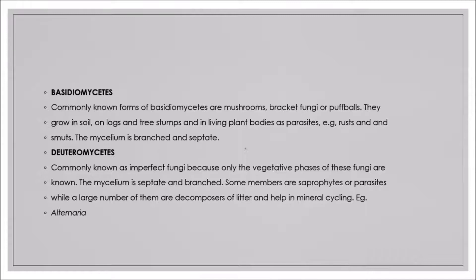Basidiomycetes include mushrooms, bracket fungi, and puff balls. They grow in soil, on tree logs, and tree stumps, and sometimes live as parasites in living plants. Examples include rust and smuts. The mycelium is branched and septate.